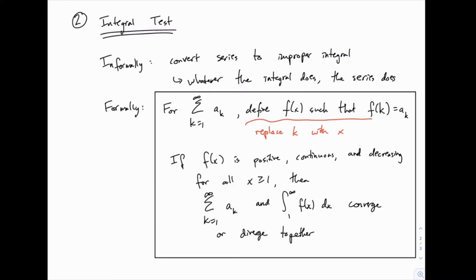Basically, the idea is we're going to convert an infinite series to a parallel improper integral. If that improper integral converges, we will know that the series converges. If the improper integral diverges, we'll know that the series diverges. It needs to be something that we can integrate, and the function will need to fit a few characteristics. But if it does, then we can apply this test.